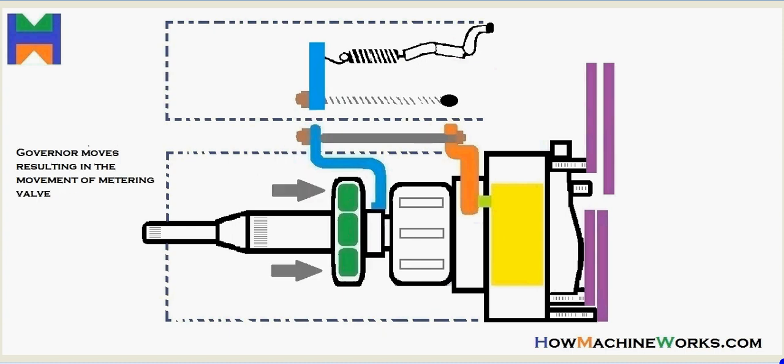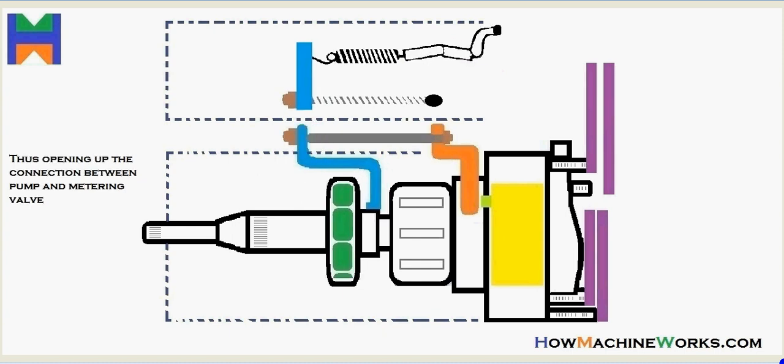So as the metering valve further moves, it opens up the connection between the pump and the metering valve where the fuel flows. From the pump, the fuel flows to the metering valve and finally reaches the injectors.